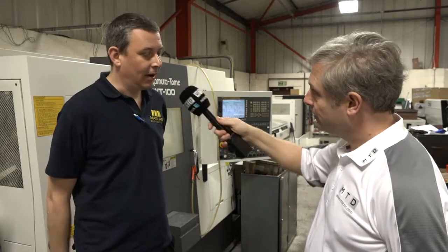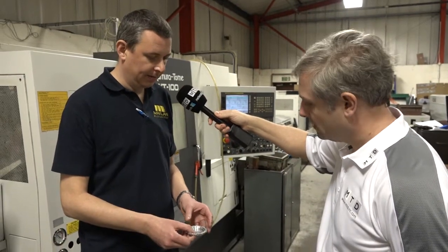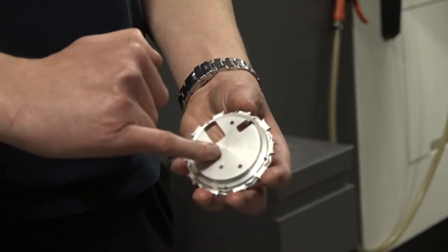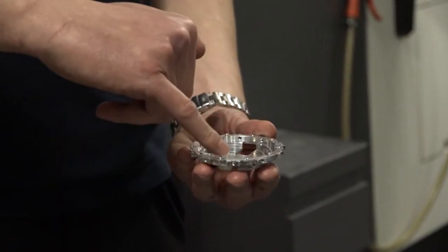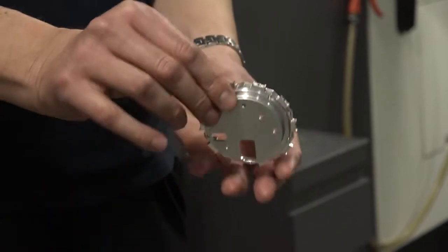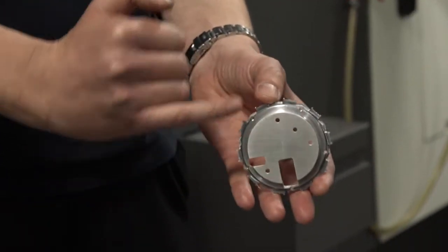Examples of your work please? Alright, here's a milling component. This is done in three ops: we turn the back end, get it on the mills, do the pockets and the bosses, and then it goes on to four axes to do around the edges.